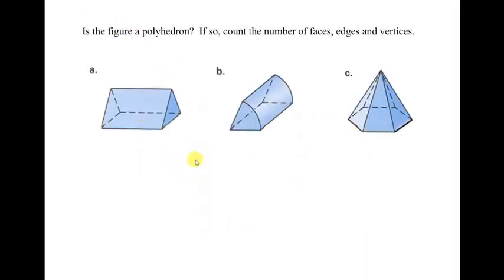Look at these examples. We want to know if these are polyhedron or not. Remember the definition of polyhedron is a three-dimensional figure made only of polygons. So any curved surfaces would not be included. In part A, we see only polygons, specifically triangles and rectangles. So this would be a polyhedron.